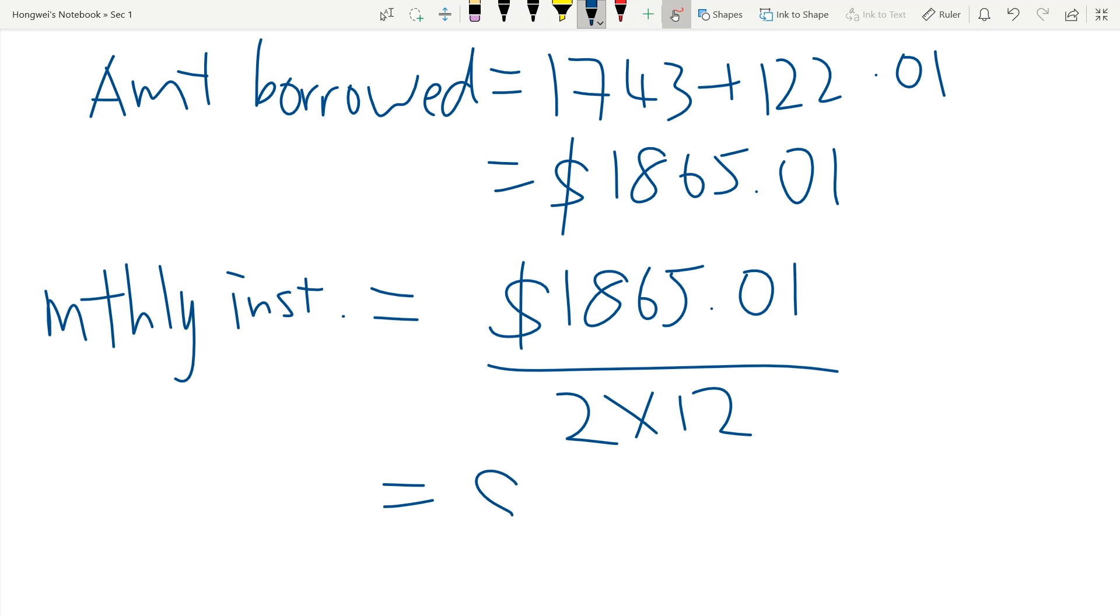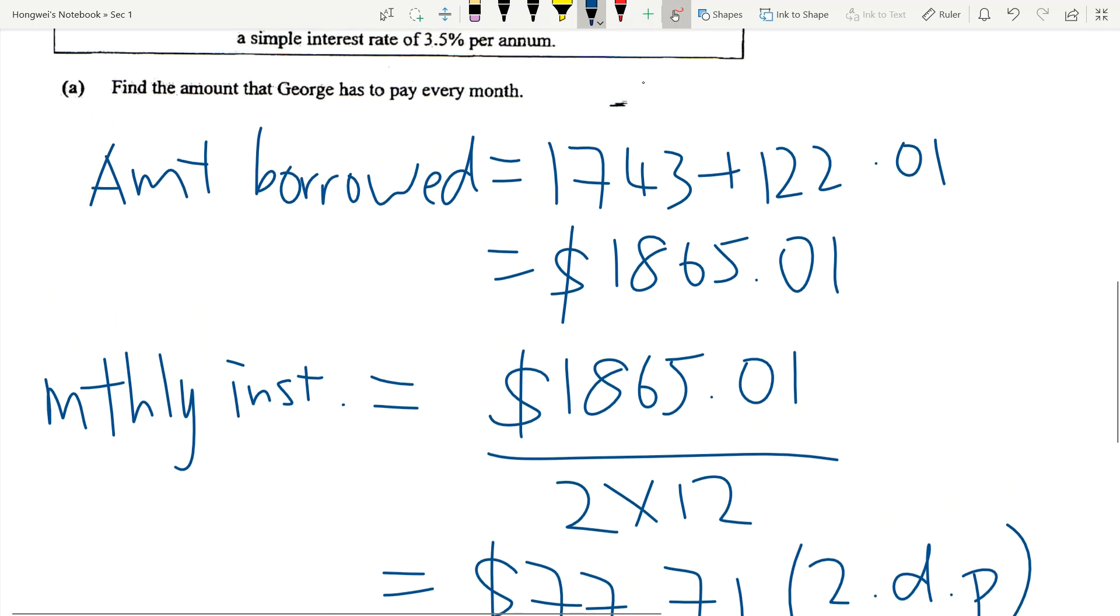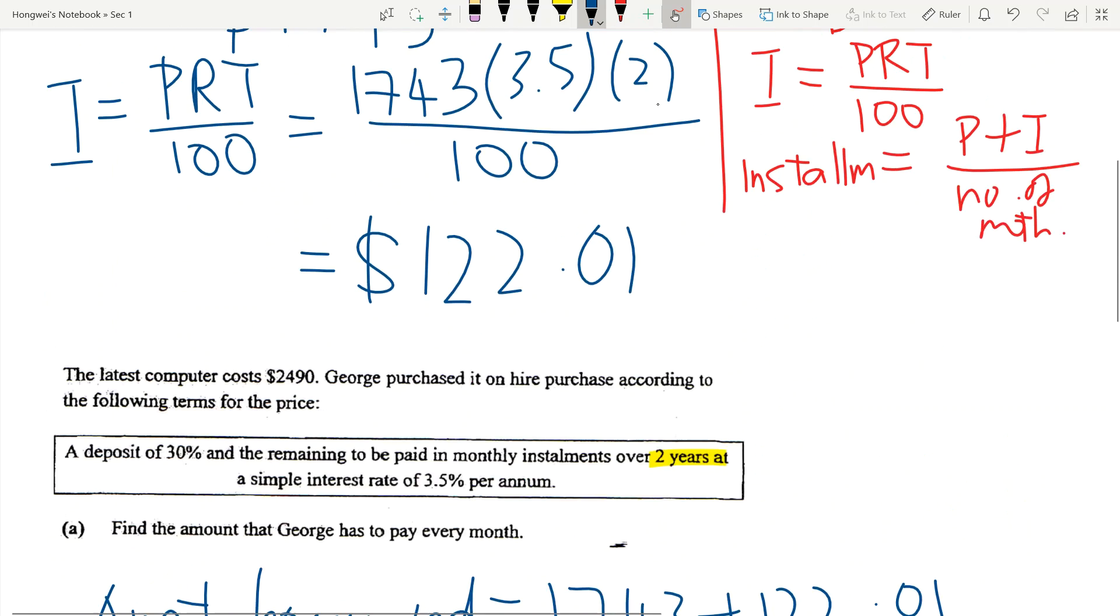And it equals $77.71. Money you must always put to two decimal places, and nothing else. Even if it's $77.70, that's the answer. You have to put it at $77.70 because money must always be in two decimal places.